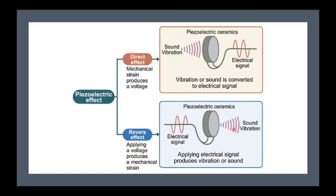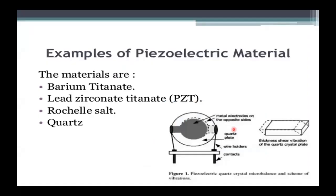Does any material perform this piezoelectrical effect? Of course not. As with light harvesters and thermoelectrical harvesters, such effects are associated with certain unique properties in some materials. The most famous piezoelectrical materials are barium titanate (BaTiO₃) with its ABO₃ perovskite structure, lead zirconate titanate (PZT), Rochelle salt, and quartz. These are the most famous materials used nowadays as piezoelectrical harvesters.